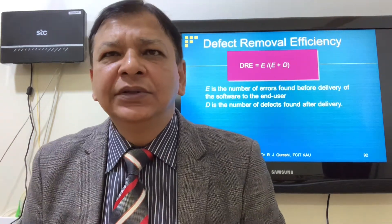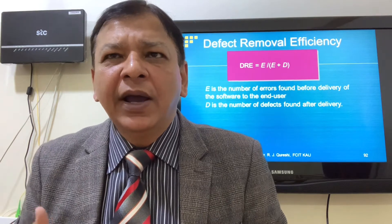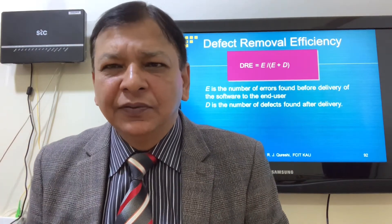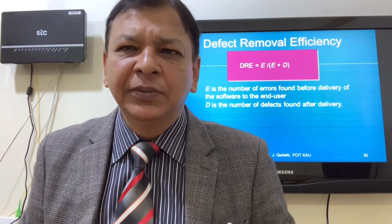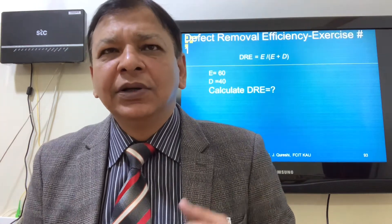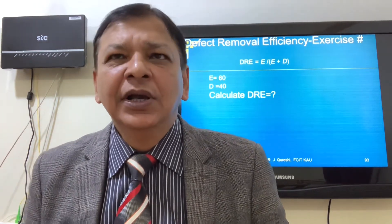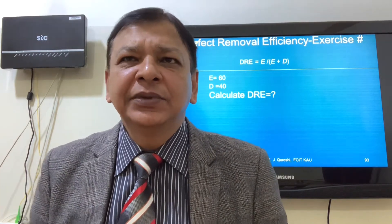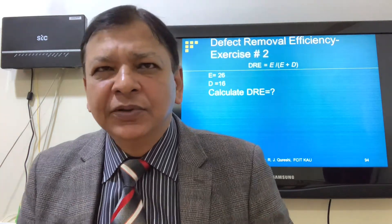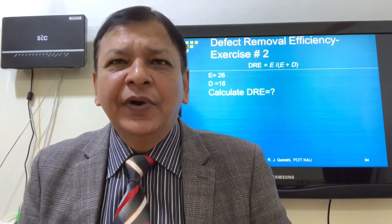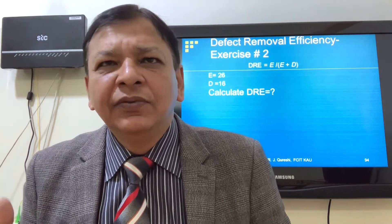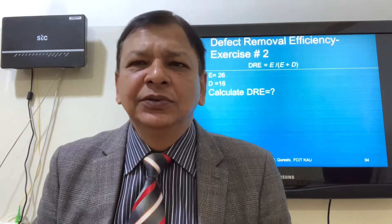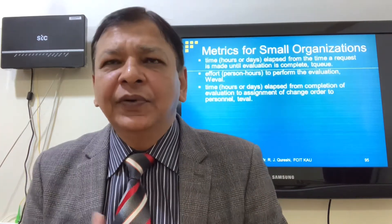Defect removal efficiency (DRE) = Errors / (Errors + Defects) × 100. Errors are bugs reported at the software company side, whereas defects are bugs reported by the customer. Example: errors = 60, defects = 40, so DRE = 60/100 × 100 = 60%. Exercise: 26 errors, 16 defects — DRE = 26/42 × 100 = 62%. From release one to release two, defect removal efficiency increased.